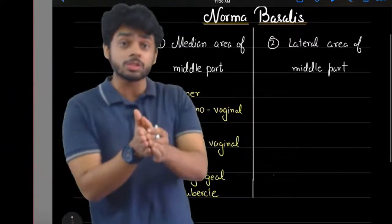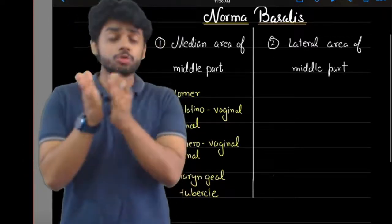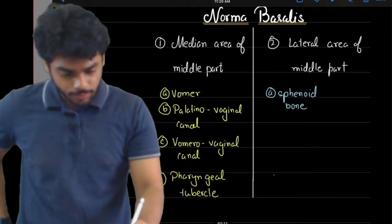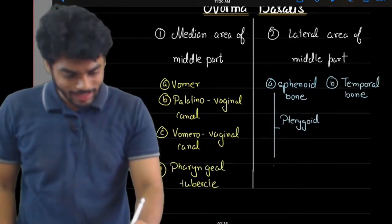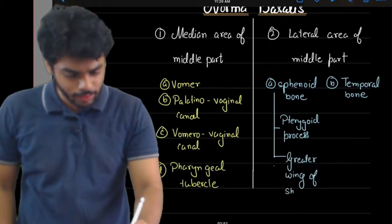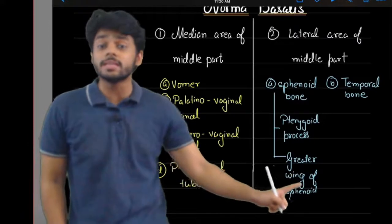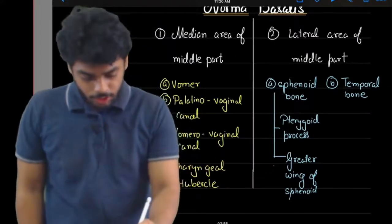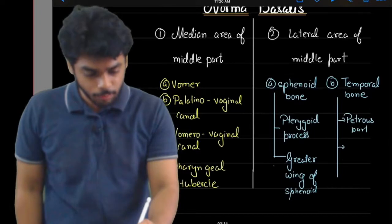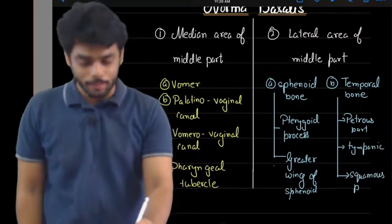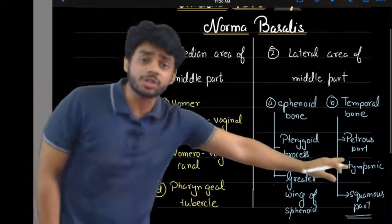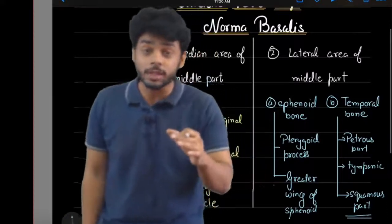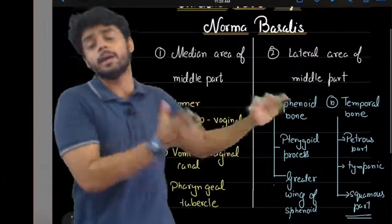In the lateral area of the middle part, there are two bones we can see: the sphenoid bone and the temporal bone. Of the sphenoid bone we see the pterygoid process and the greater wing of sphenoid. The structures of the temporal bone visible here are the petrous part, tympanic part, and squamous part. We cannot see the mastoid part because it comes under the posterior part of Norma Basalis.